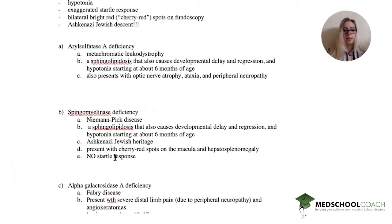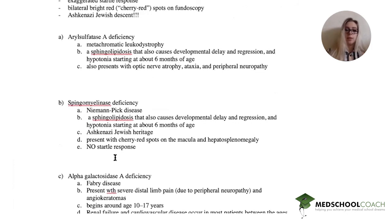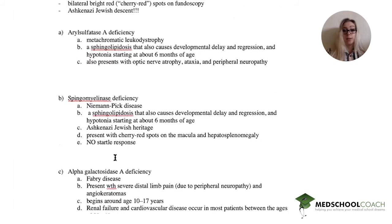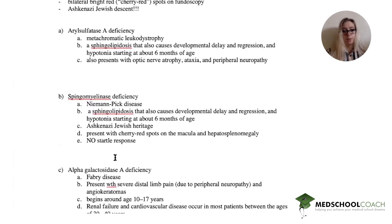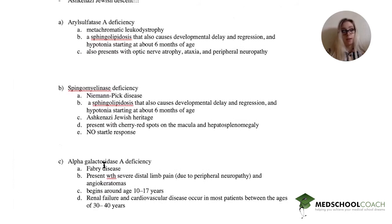Alpha galactosidase A deficiency is Fabry disease. These patients present with severe distal limb pain due to peripheral neuropathy, as well as angiokeratomas — that's a buzzword. It begins around age 10 to 17, so a bit later in a child's life, and it presents — usually the cause of death — with renal failure and cardiovascular disease between ages 30 and 40. So it's definitely not our patient.